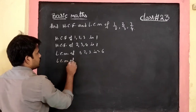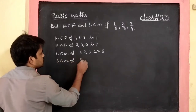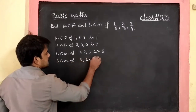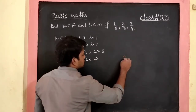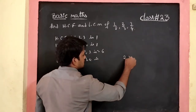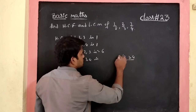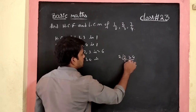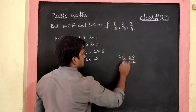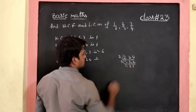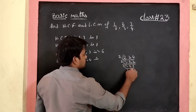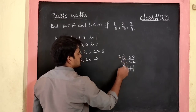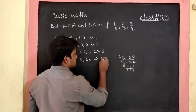LCM of denominators 2, 3, 4: dividing by 2 gives 1, 3, 2; dividing by 2 gives 1, 3, 1; dividing by 3 gives 1, 1, 1. So LCM is 2 × 2 × 3 = 12.